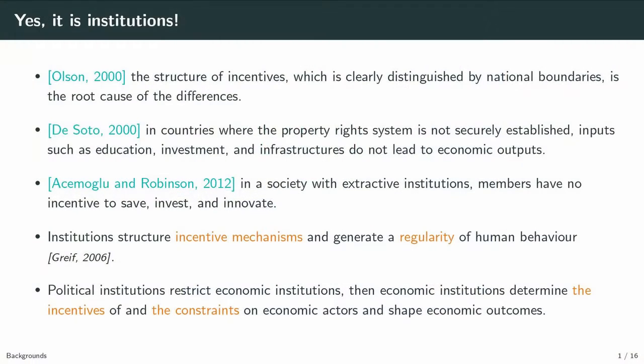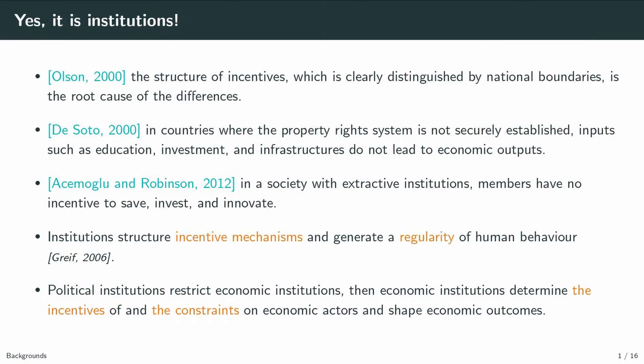Diverse books and studies found the answer to my question: it is institutions. Olsen finds that neoclassical variables do not account for economic differences between countries. The structure of incentives, which is clearly distinguished by national boundaries, is the root cause of the differences. Political institutions restrict economic institutions, and economic institutions determine the incentives of economic actors and shape the economic outcomes.